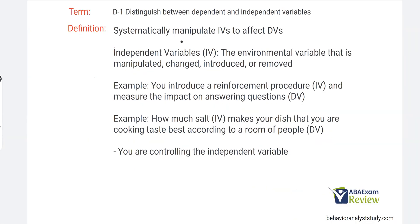Let's talk about independent variables. Remember, you're manipulating the independent variable in an effort to affect the dependent variable. So whatever you're introducing, whatever you're changing, whatever you're taking away — that's your independent variable. The dependent variable is going to be your behavior. For example, if I'm using extinction, that would be my independent variable, on screaming — that's my dependent variable. The IV, the independent variable, is the environmental variable manipulated, changed, introduced, or removed.